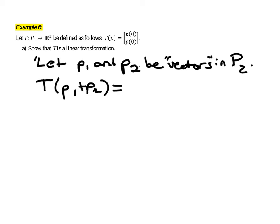Okay, so according to the instructions we're given for this particular transformation, T of the polynomial P1 plus P2 would be the two-dimensional vector whose first component would be that polynomial P1 plus P2 evaluated at zero. And the second component would actually be the exact same thing, the polynomial P1 plus P2 evaluated at zero.